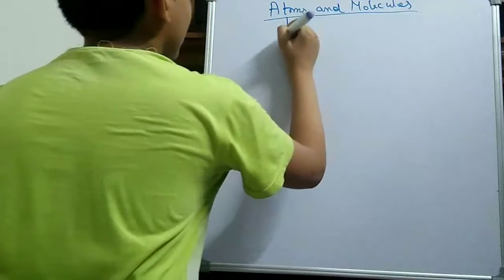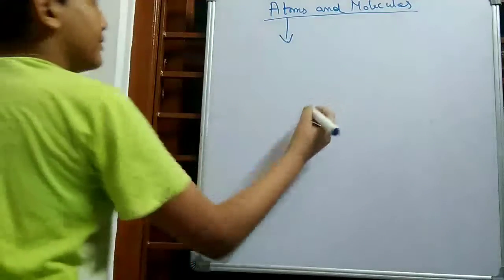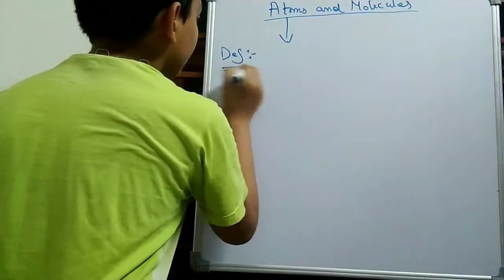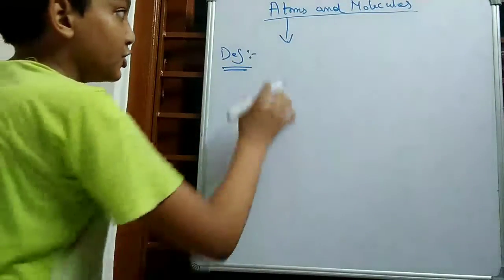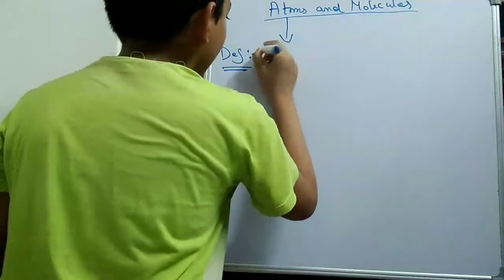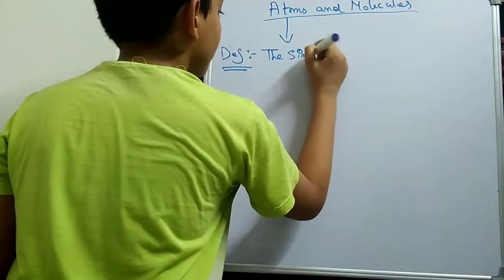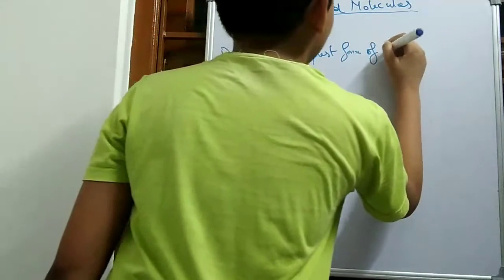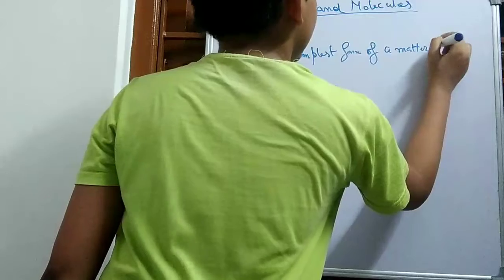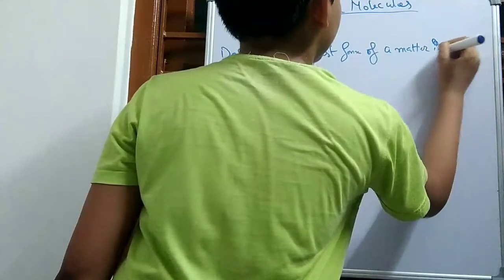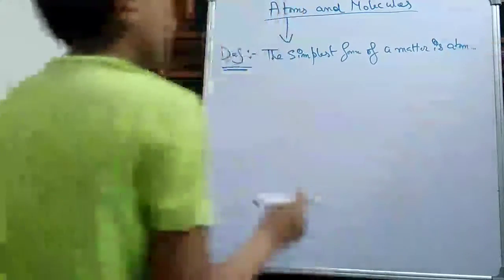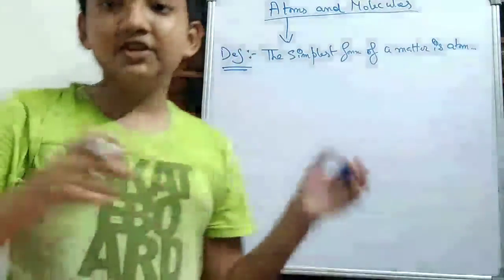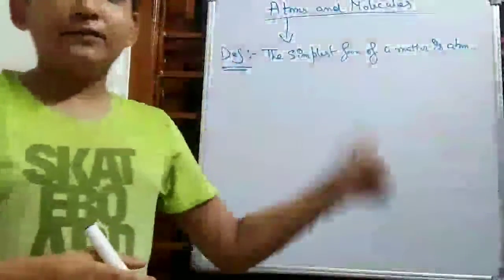At first, let us see the definition of atoms. So what is the definition of atom? The simplest form of matter is atom. This is the definition of atom.